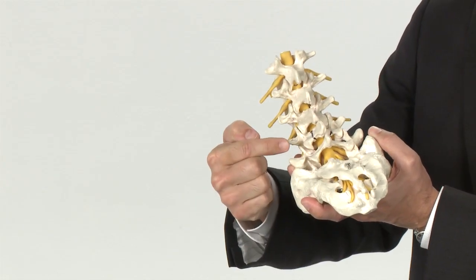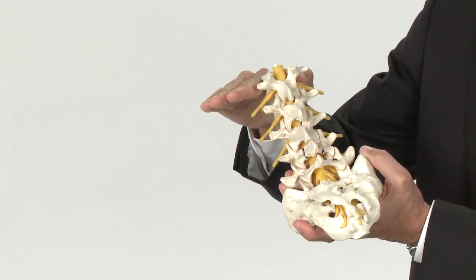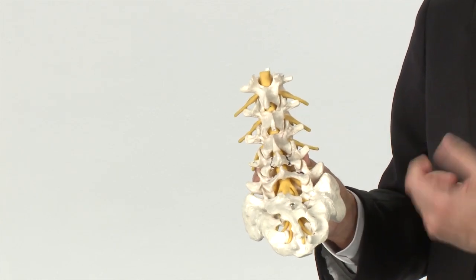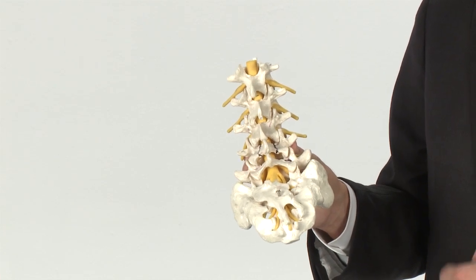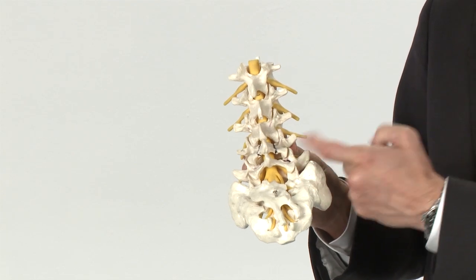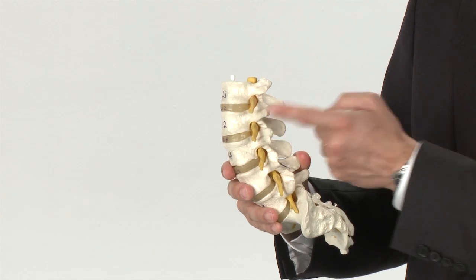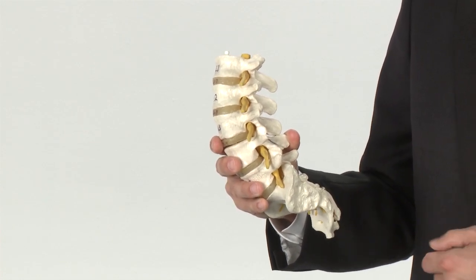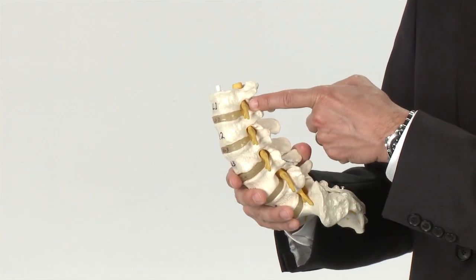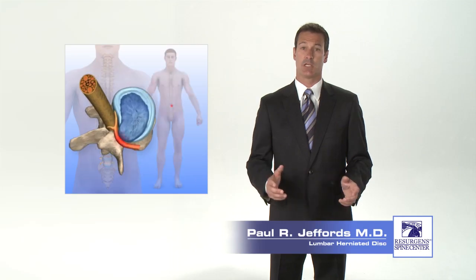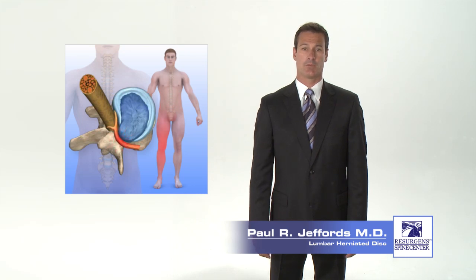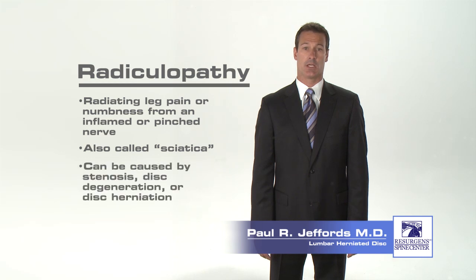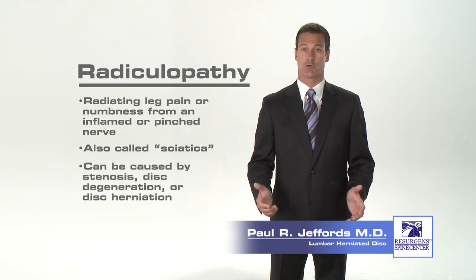Running through the spinal canal is the spinal cord, which runs down from the brain and stops at the first lumbar vertebra. Below L1, there is no longer a spinal cord, only nerves that have branched off — called nerve roots because they look like roots branching off a tree trunk. These nerves travel down through the spinal canal in a sack of spinal fluid. At each disc level, a pair of spinal nerves exits the canal and radiates down the legs to supply muscles, joints, and skin throughout the legs and feet, exiting through tunnels called foramen bordered by the disc in front and facet joints in the back. Irritation or pinching of these nerves causes radiating leg pain or numbness, known as radiculopathy or sciatica, which can result from stenosis, disc degeneration, or disc herniations.